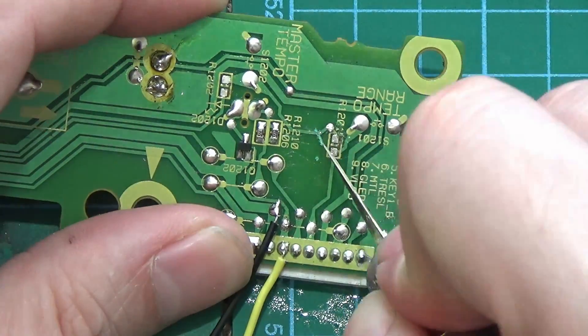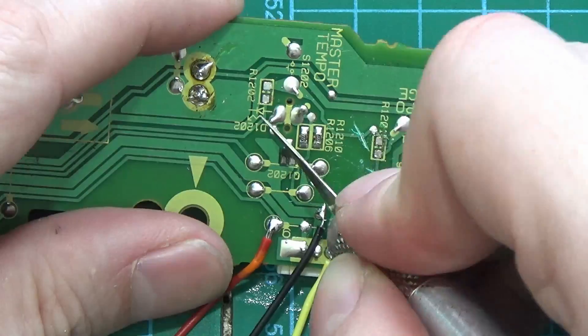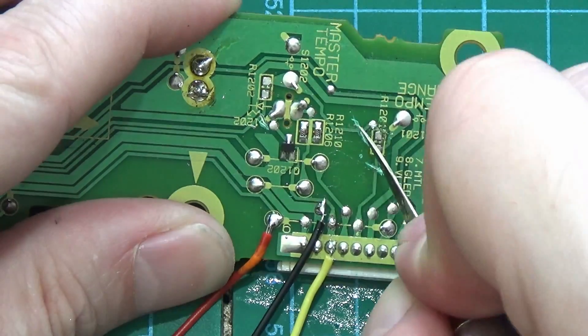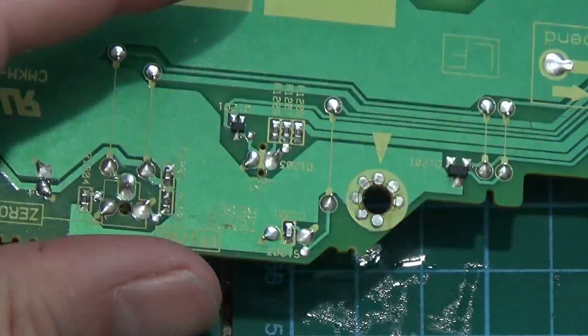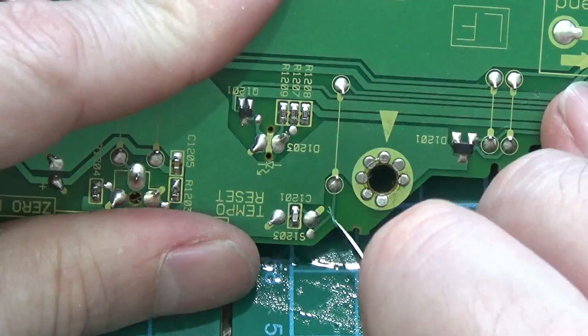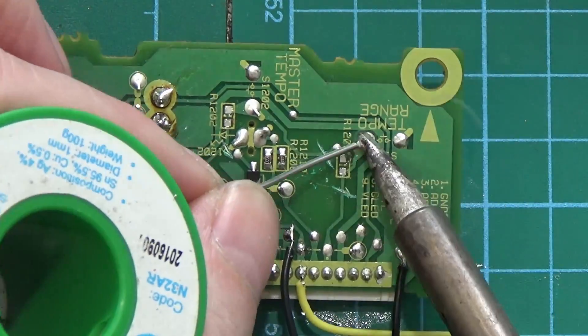And now we're going to cut the tracks that join all of these buttons together so that each button doesn't interfere with the other buttons. We don't need to remove the resistor for the tempo reset button because it doesn't have one, but we cut the track. I am actually not using it in this example, it's up to you if you want to use it.